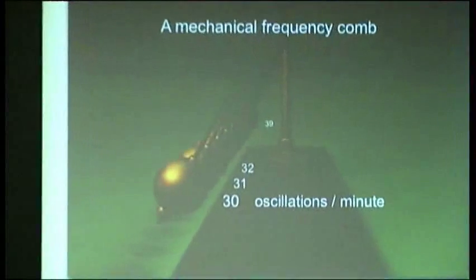Here's a mechanical analog of such a frequency comb. Imagine that you have a row of pendulums, and you trim them so that the first one makes 30 oscillations per minute, the next 31, the next 32, up to 39 oscillations per minute, and you let them go. Originally they are all in phase, but very quickly they will go out of phase. Each pendulum corresponds to one of these comb lines, and if they are out of phase there is destructive interference and you get dark out of your laser.